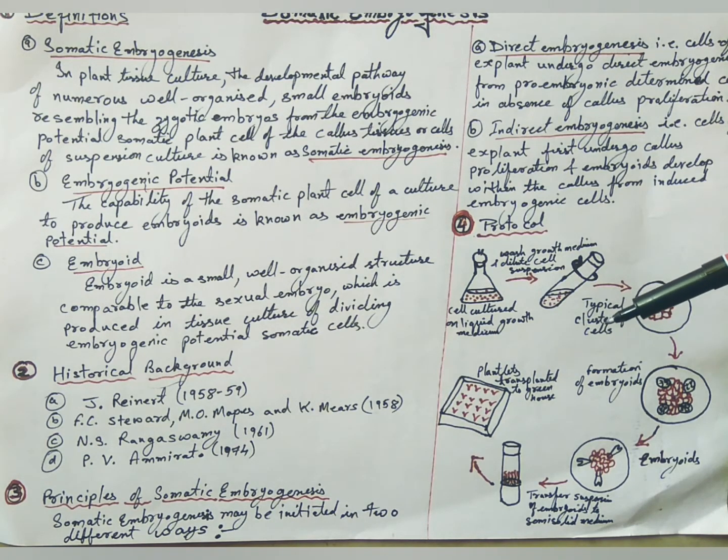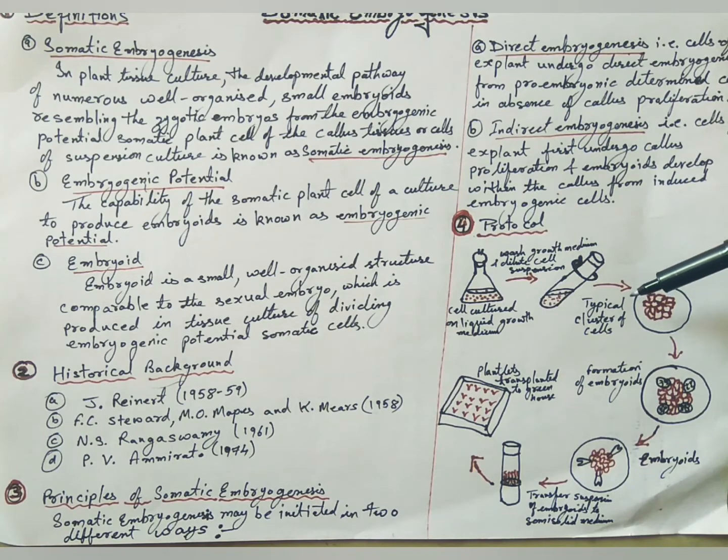In this medium, the explant will produce sufficient callus tissue. After 4 weeks of callus growth, cell suspension culture is to be initiated by transferring 0.2 grams of callus tissue to a 250 ml flask containing 20 to 25 ml of liquid medium of the same composition as used for callus growth.